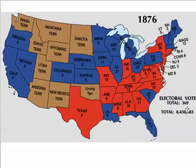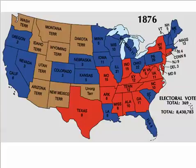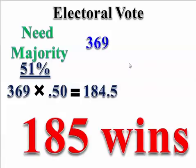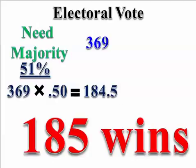In 1876 there are 369 Electoral College votes total. The states shown in brown were still territories and did not vote. To determine who wins the presidency, a candidate needs a majority — 51%. Multiplying 369 by 50% gives 184.5, so 185 Electoral College votes were needed to win the presidency. Whichever candidate received 185 votes would win. Each state counted its electoral votes and sent them in.